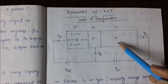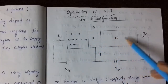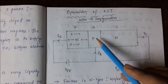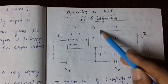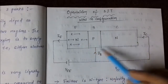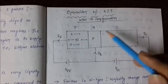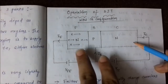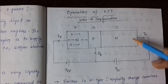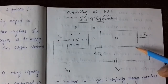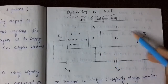The collector is moderately doped compared to the other two regions. Its doping concentration is in between that of the emitter and the base — less than the emitter but more than the base. As you notice, the collector has the highest area in the NPN transistor configuration. Since it collects the majority charge carriers — electrons in NPN — a large amount of heat is produced, so it has a large area to dissipate heat efficiently and prevent overheating.